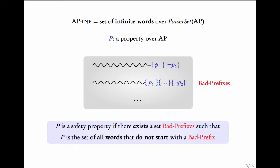Let's recall what safety properties are. Suppose AP is a set of atomic propositions. Consider the power set of AP and look at infinite words formed over it. APInf is the set of all infinite words over this alphabet. A property is just a set of infinite words over the power set of AP. A property P is said to be a safety property if there exists a set of bad prefixes such that P is exactly the set of all words that do not start with a bad prefix. This set of bad prefixes is a set of finite words.